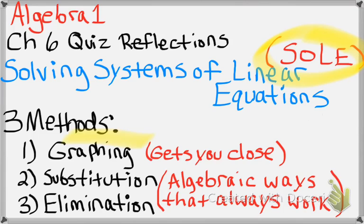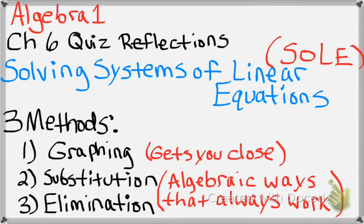Those three methods were the graphing method — the visual way that gets you close, and if it's a pretty answer you can find it using graphing as long as you're precise. Then there are two algebraic ways: the substitution method and the elimination method. They both always work. In this quiz, I'll go back and forth choosing the method based on what would be easiest, and I'll explain my reasoning.